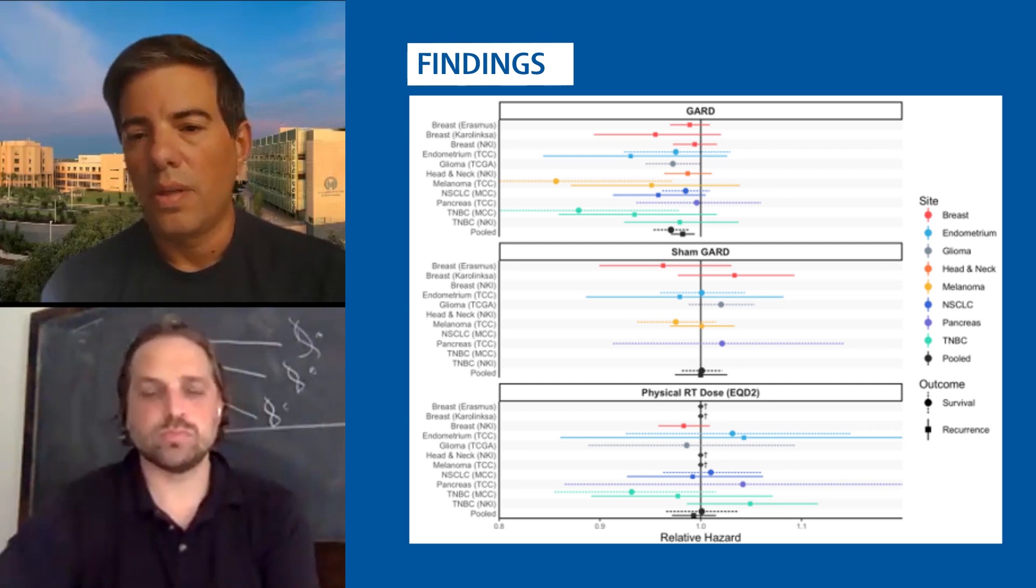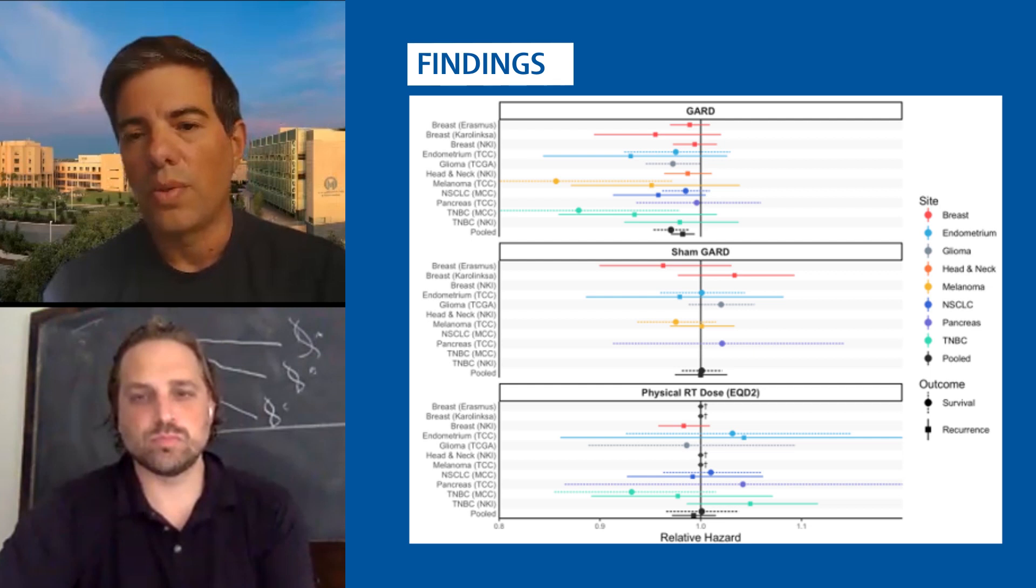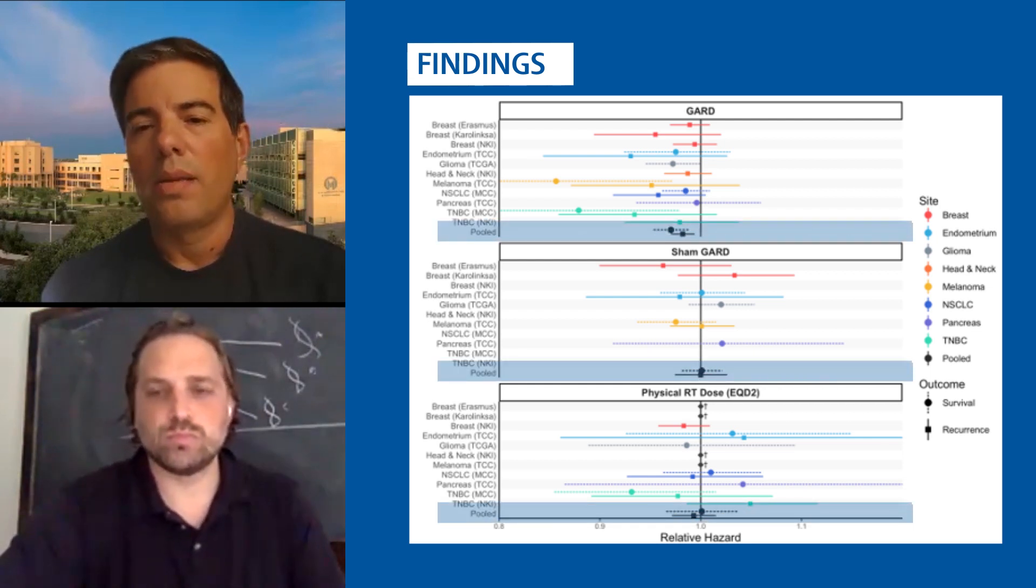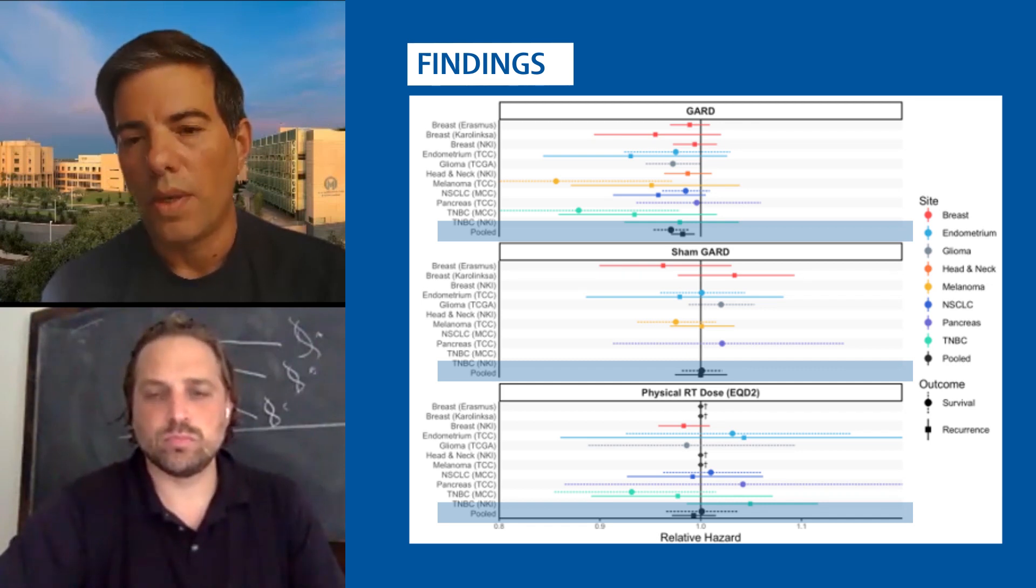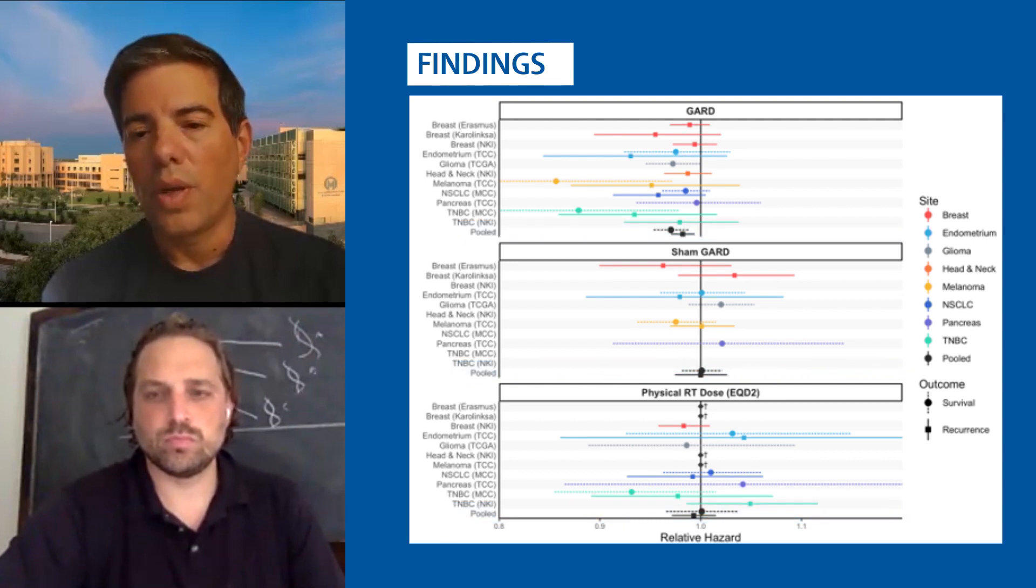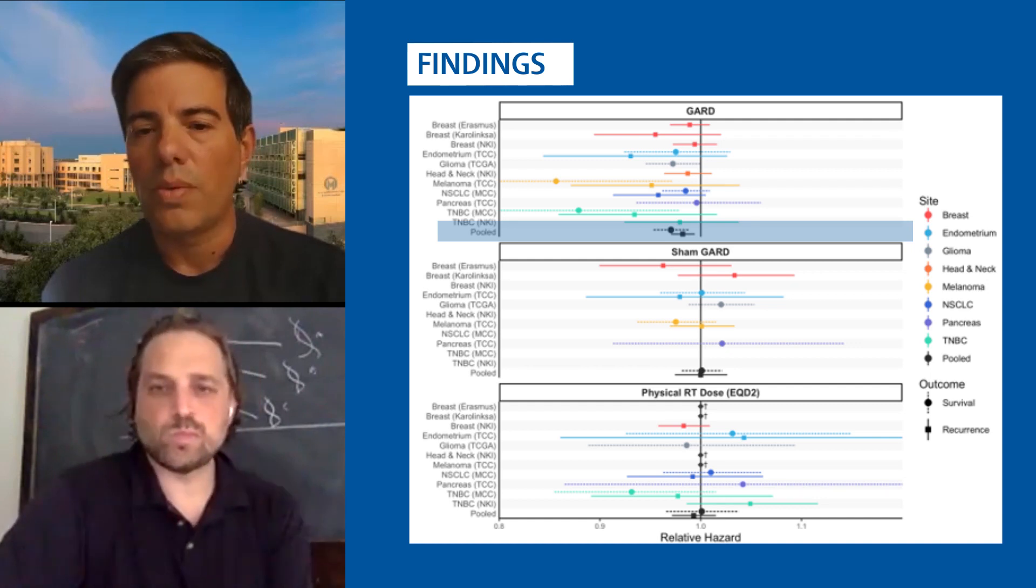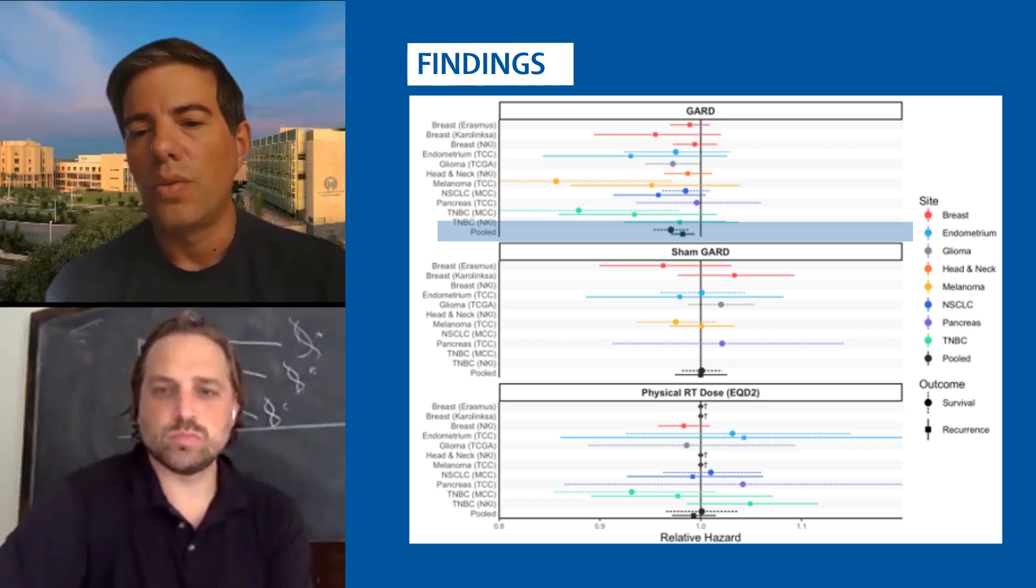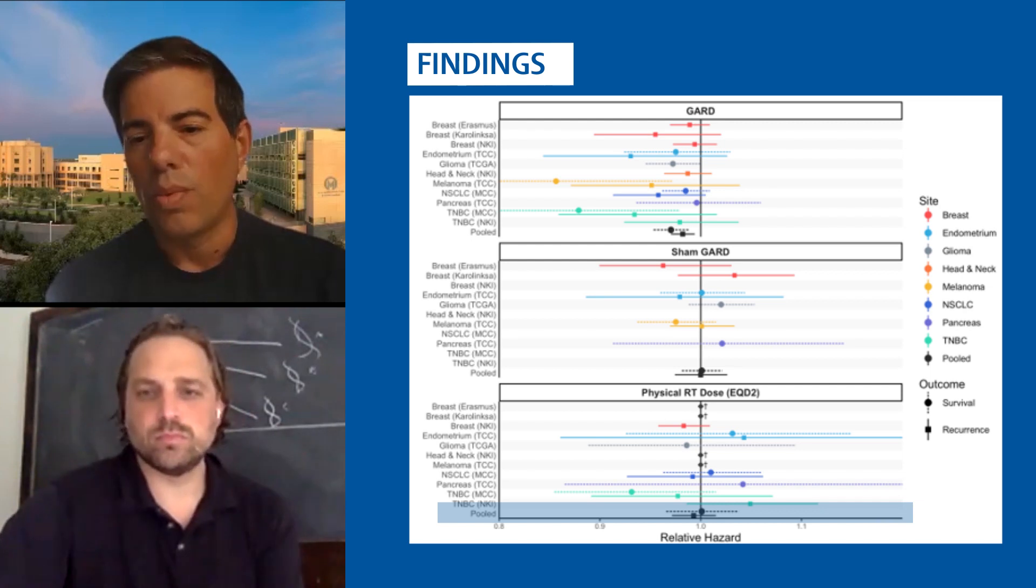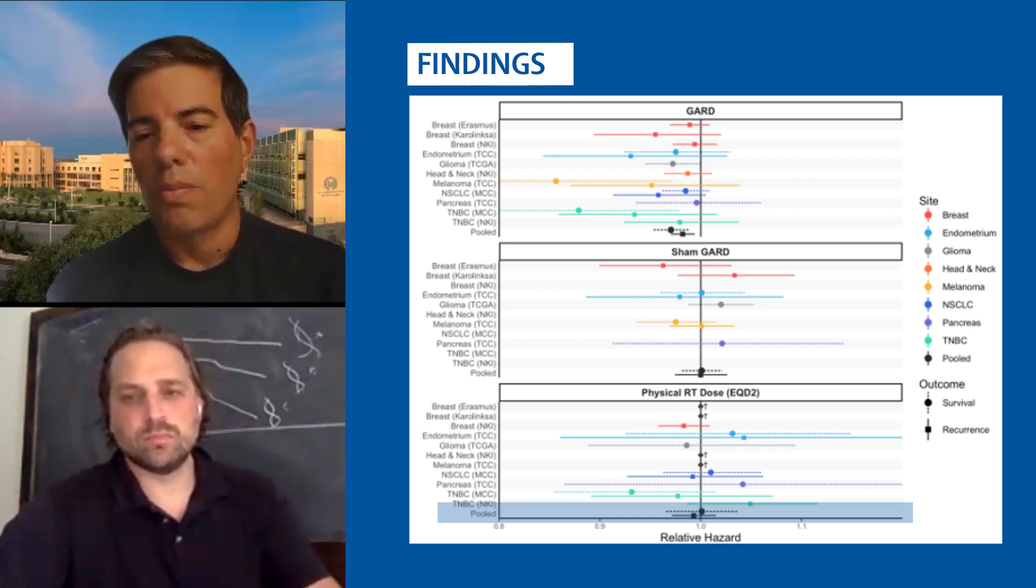And this is a classic forest plot showing the results in each of the individual cohorts. And then at the very bottom in black, we have the pooled results, including all of the patients. And as you can see, GARD is a predictor of clinical outcome, or I should say, it's associated with clinical outcome, both in overall survival and first recurrence as a continuous variable. But critically, physical dose is not.